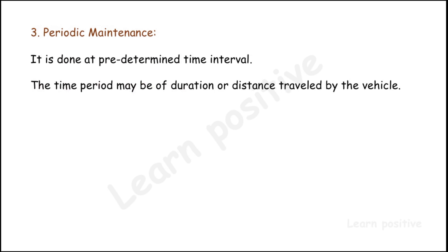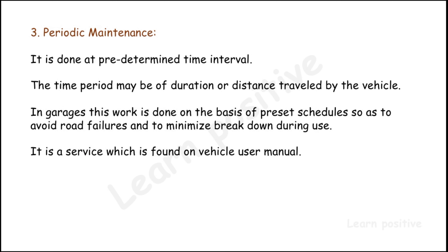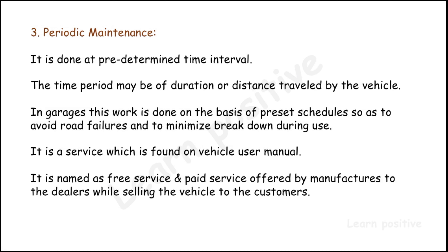The third type is periodical maintenance, done at predetermined time intervals. It falls under preventive maintenance and is the first step in taking care of a vehicle. The time period may be based on duration or distance traveled. Duration examples include daily, weekly, monthly, or one to two months. Distance examples include 1,000 km, 5,000 km, 10,000 km, or one lakh kilometers. This maintenance is done in garages on a preset schedule to avoid road failures and minimize breakdowns.